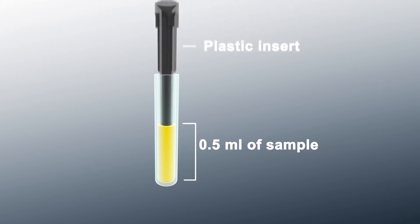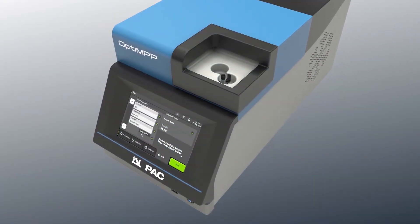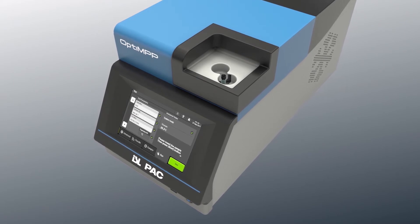OptiMPP uses 1 milliliter clear glass vials and inserts. Fill the sample vial with 0.5 milliliter of sample and place the plastic insert into the vial. Load samples one at a time. The unit senses the presence of the sample and notes the position of the sample vial on the carousel.